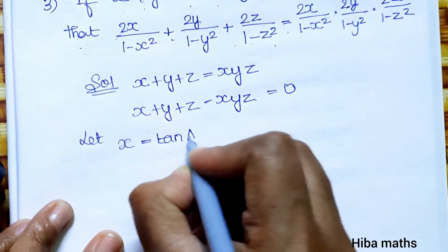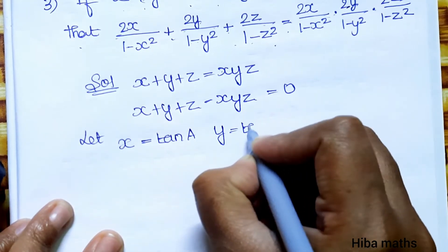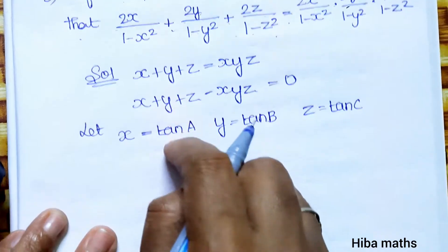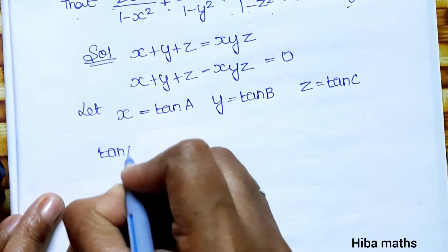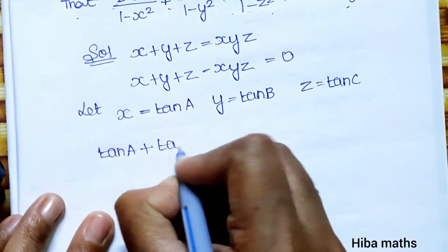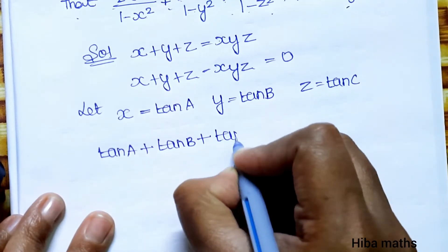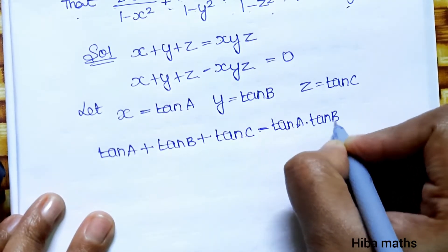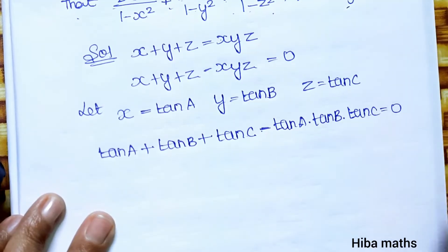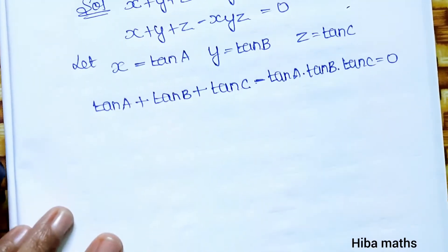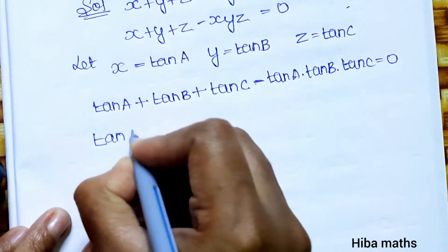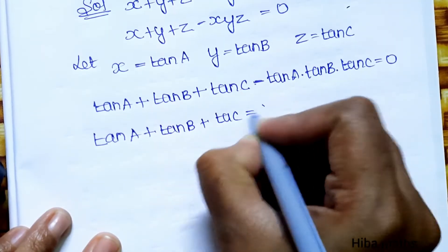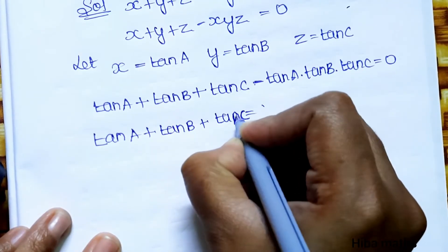Let x equal to tan A, y equal to tan B, and z equal to tan C. Now we substitute: tan A plus tan B plus tan C minus tan A times tan B times tan C equals 0, which gives us tan A plus tan B plus tan C equal to tan A times tan B times tan C.